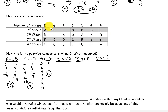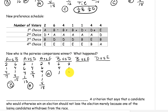B versus D: D is on top on the first two. B is on top on the six, the four, and this one. D is on top on the next one, on the four, and also on the last four. Candidate B has a total of 11 and candidate D also has a total of 11, so they both get a half.